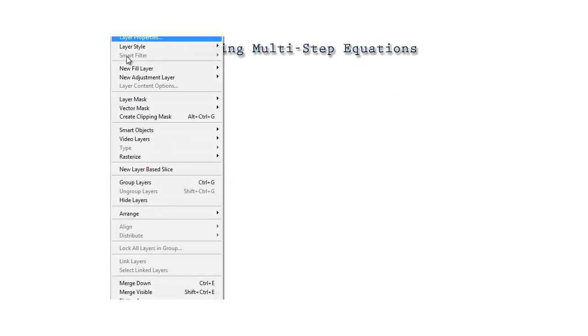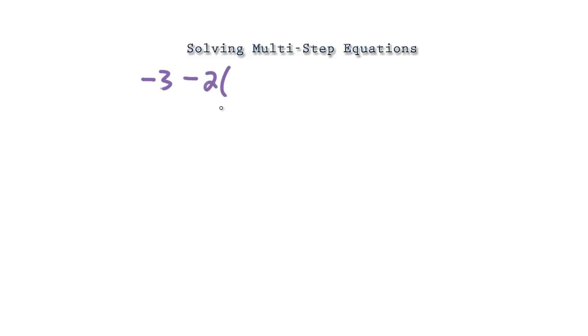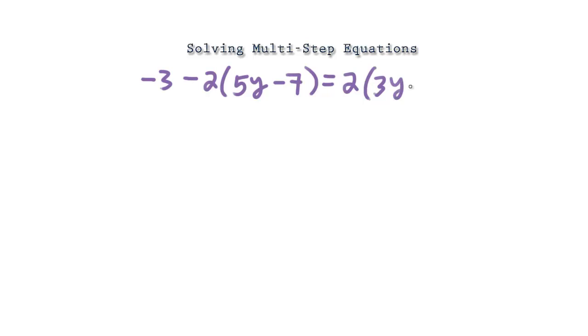Let's take a look at another one. Let's say we have negative 3 minus 2 times, in parentheses, 5y minus 7, equals 2 times, in parentheses, 3y minus 5, plus y. This is a long one — it looks scary at first, but let's break it down.